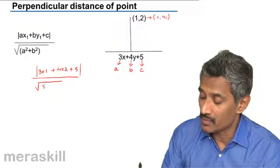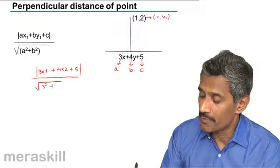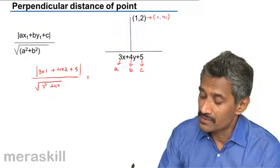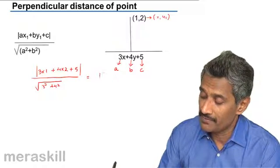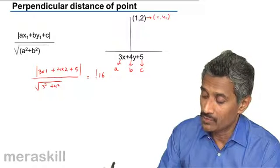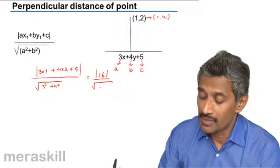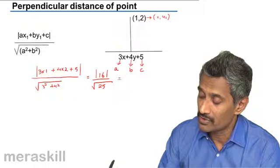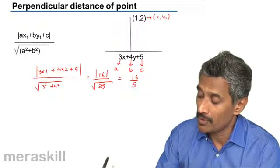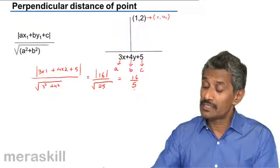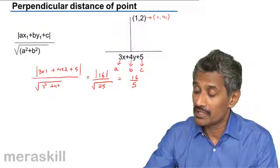Which is going to be 3 plus 8, which is 11, plus 5, which is 16. So the absolute value of 16 divided by the square root of 3 squared, which is 9, plus 4 squared, which is 16, equals 25. This will turn out to be 16 upon 5. Hence, the distance of this point from this particular line is 16/5.